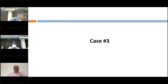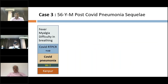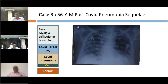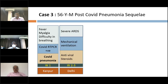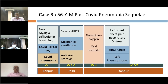I would like to invite Dr. Anu to present case three. Case three is a 56-year-old male with post-COVID pneumonia sequelae, presenting with fever, myalgia, and difficulty breathing. He tested COVID RT-PCR positive at a hospital in Kanpur and was diagnosed with COVID pneumonia. Chest imaging showed reticular nodular shadows suggestive of interstitial pneumonia. He subsequently developed severe respiratory failure and was transferred to a hospital in Delhi, where he had severe ARDS, was intubated, and treated with antivirals and steroids for about two to three weeks. He was discharged home by the fourth week on domiciliary oxygen and oral steroids.